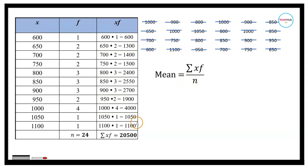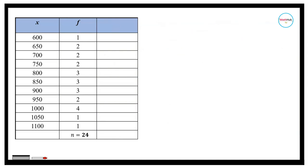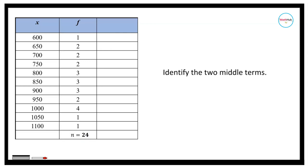Adding everything and dividing by 24, we get a mean of 854 words per minute. Next, let us compute the median. We have 24 data entries, which is an even number, so we need to identify the two middle terms and get their average.